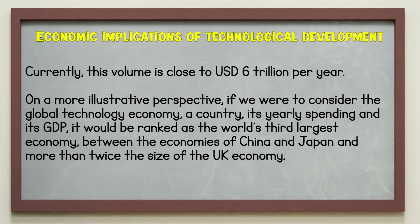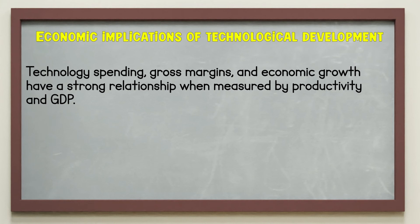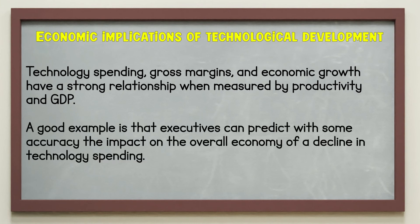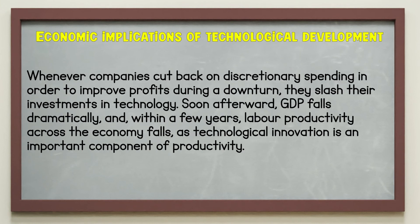On a more illustrative perspective, if we were to consider the global technology economy as a country and its yearly spending as its GDP, it would be ranked as the world's third largest economy — between the economies of China and Japan, and more than twice the size of the UK economy. Technology spending, gross margin, and economic growth have a strong relationship when measured by productivity and GDP. Executives can predict with some accuracy the impact on the overall economy of a decline in technology spending. Whenever companies cut back on discretionary spending during a downturn, they slash their investments in technology. Soon afterward, GDP falls dramatically, and within a few years, labor productivity across the economy falls, as technological innovation is an important component of productivity.